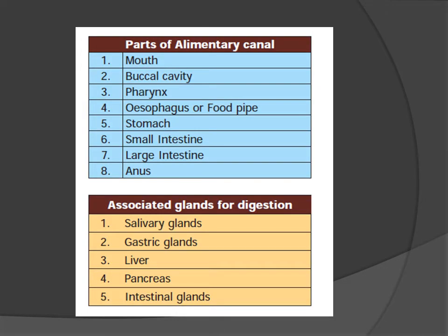Parts of the alimentary canal: mouth (buccal cavity), pharynx, oesophagus (food pipe), stomach, small intestine, large intestine and anus. Associated glands for digestion include salivary glands, gastric glands, liver, pancreas and intestinal glands.